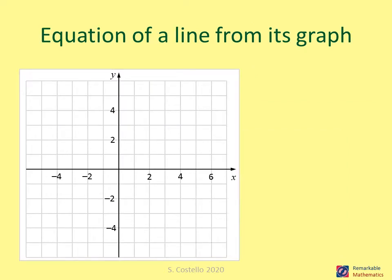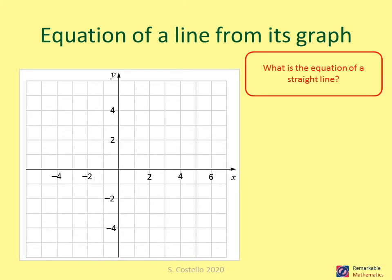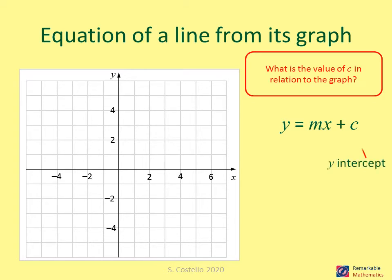Equations of a line from its graph. The equation of a straight line is y equals mx plus c. In this equation, c is the y-intercept — the point at which the graph crosses the y-axis — and m is the gradient.